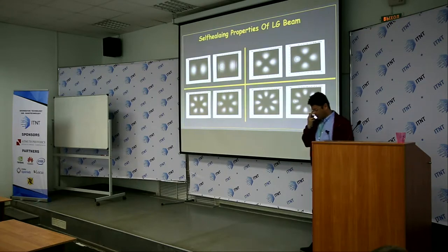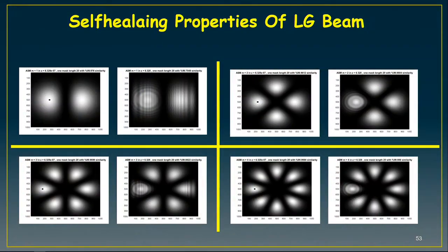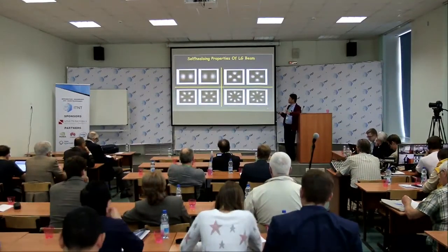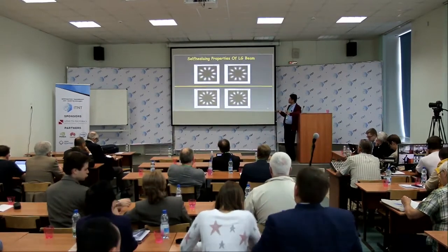I mentioned today that the Laguerre-Gaussian beam is a well-defined structured light which has different applications, but unfortunately this beam doesn't have good self-healing properties. However, in one work we show that the superposition of two Laguerre-Gaussian beams can have good self-healing properties. By the interference of two Laguerre-Gaussian beams, we analyze the self-healing properties of these materials.